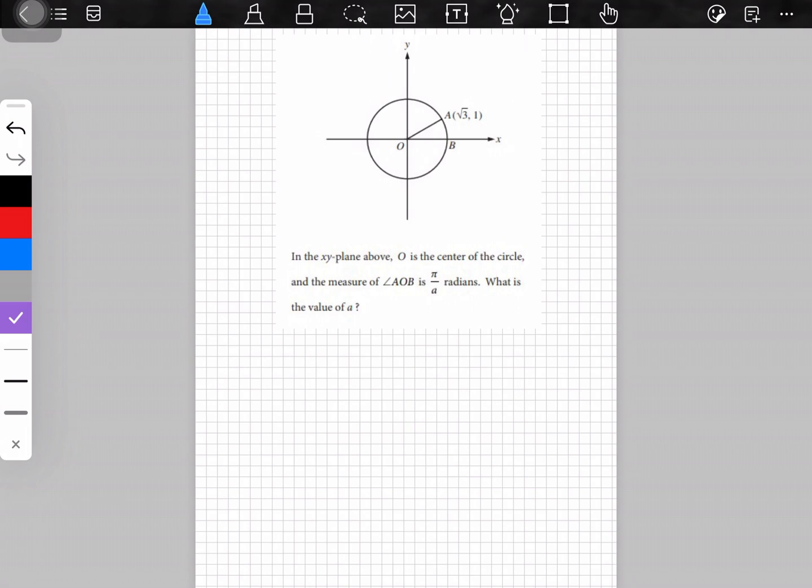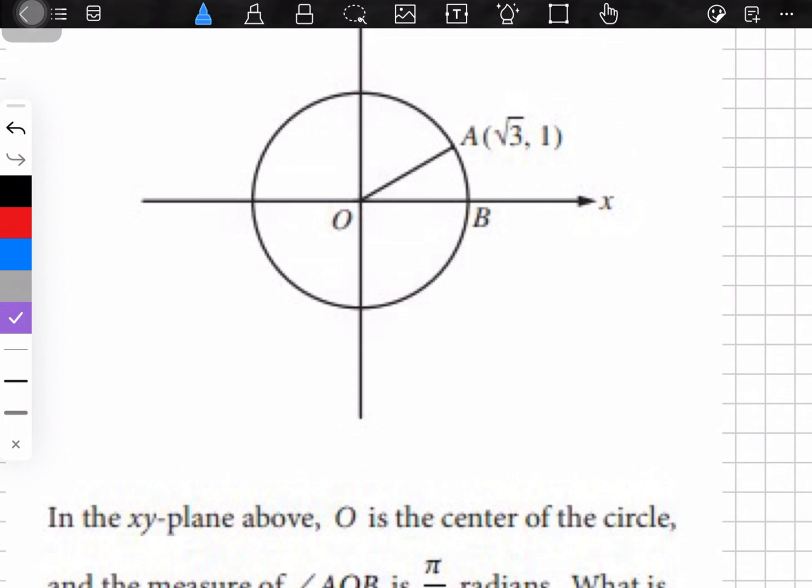So the question says in the xy plane above, O is the center of the circle and the measure of angle AOB is equal to pi by A radian. So what is the value of A? For this you don't have to do anything very difficult or specific. What you can do is...